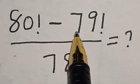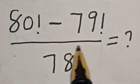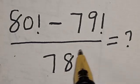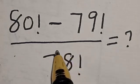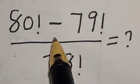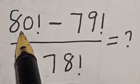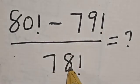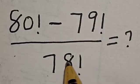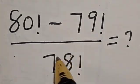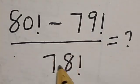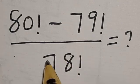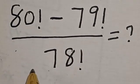80 factorial minus 79 factorial divided by 78 factorial is equal to what? Hi everyone, welcome to my class. In this class we quickly want to evaluate this math problem: 80 factorial minus 79 factorial divided by 78 factorial. Before we proceed, please don't forget to like, share, comment, and subscribe. We're going to make use of a very quick trick here.